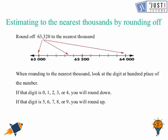So if you are rounding this number, it will be rounded off to 63,000 because it's less than 63,500. That is exactly the halfway.